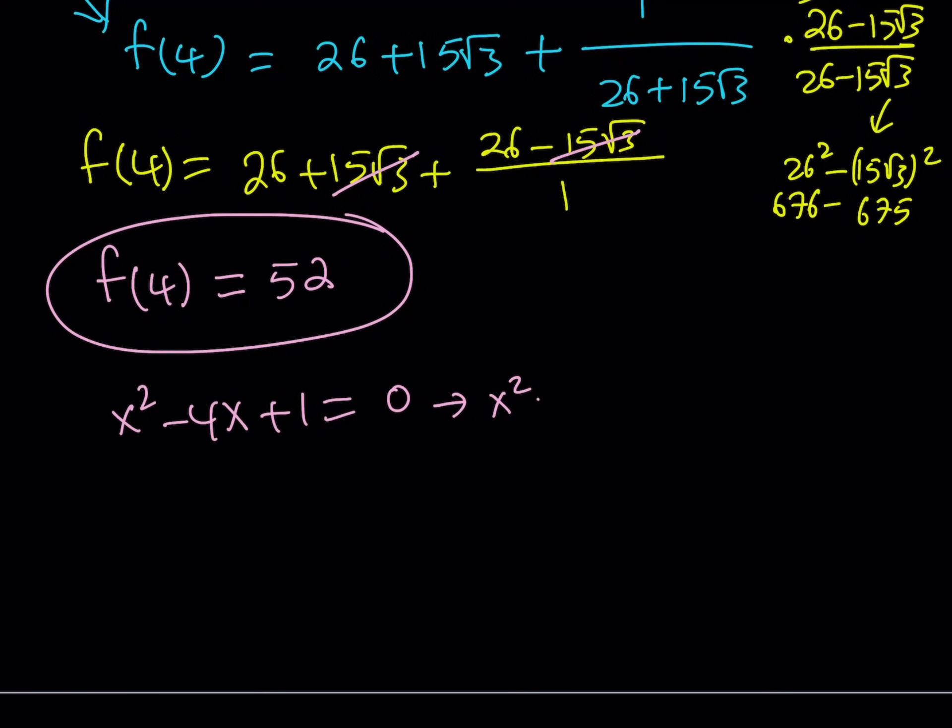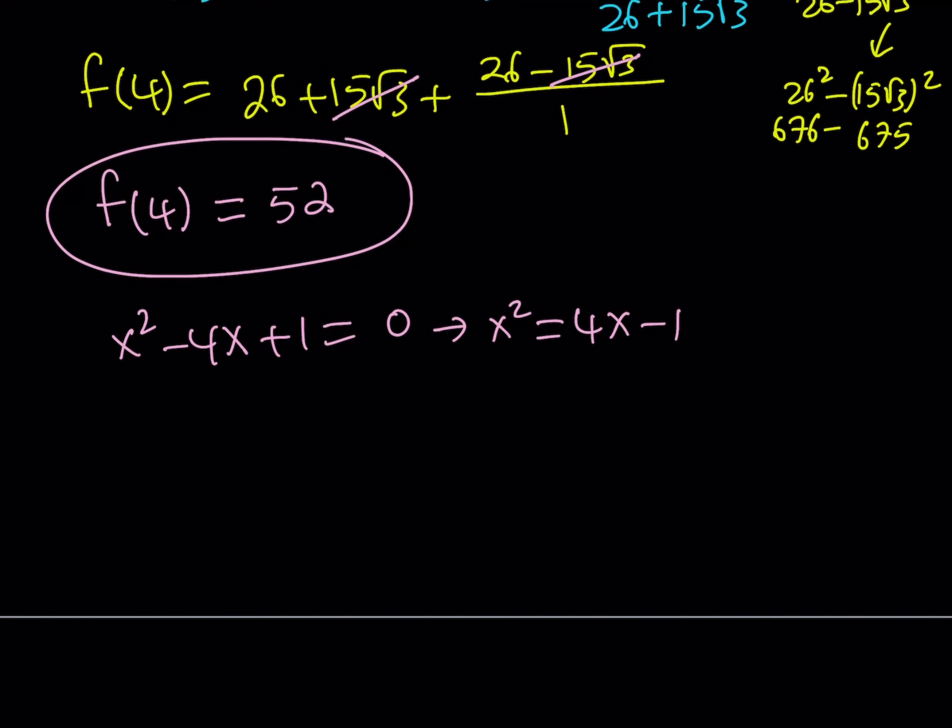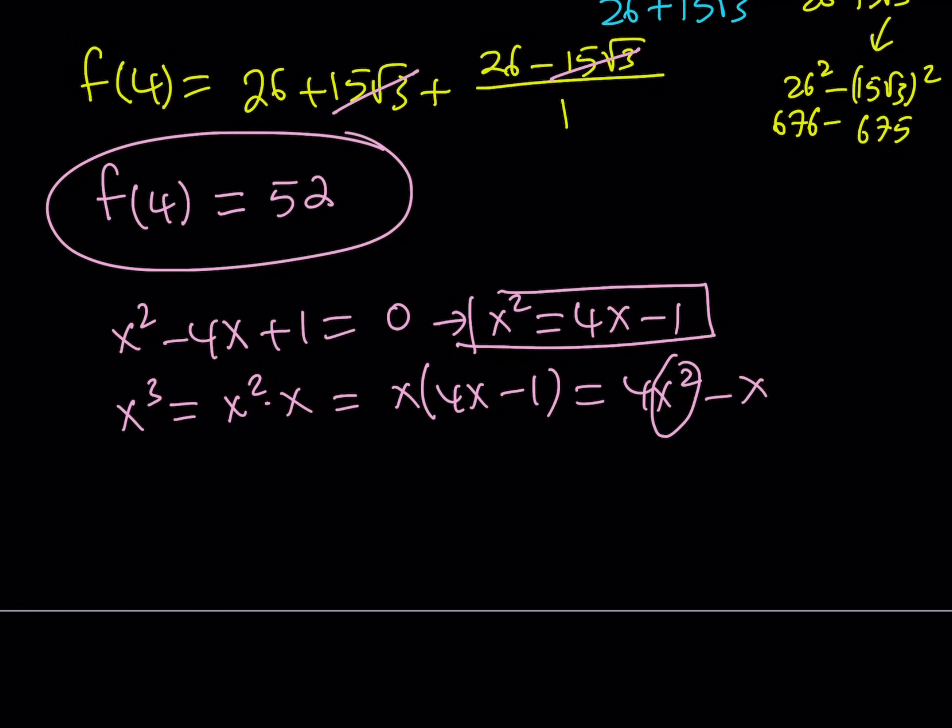Okay, so from here we can isolate x squared - you know, something that we do a lot of times with polynomials. And then I want to evaluate x cubed. Obviously x cubed is going to be x squared times x, and I can just replace x squared with 4x minus 1. And then distribute. This gives me 4x squared minus x. And again, I can replace x squared with 4x minus 1 because that's my formula.